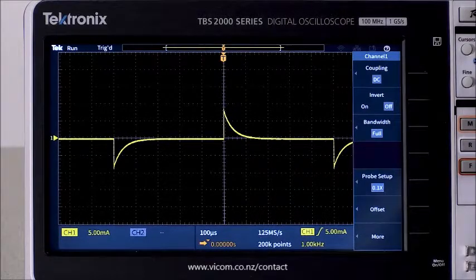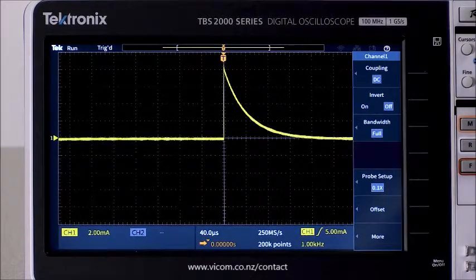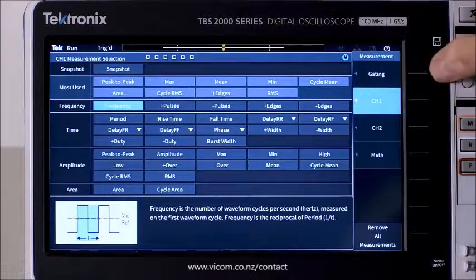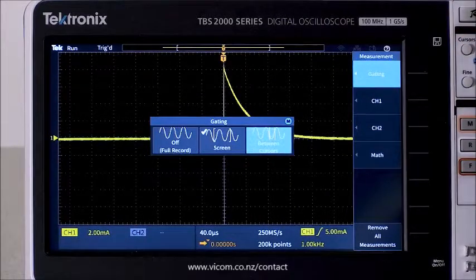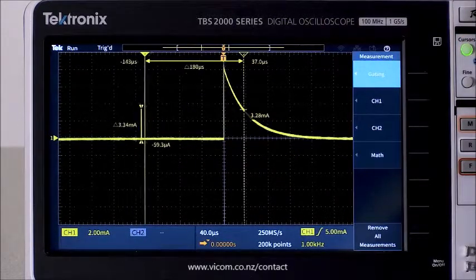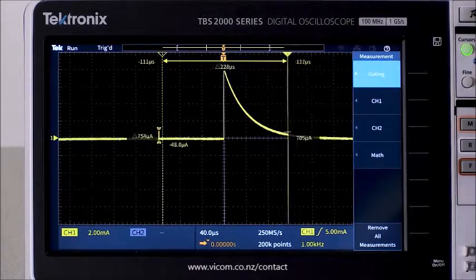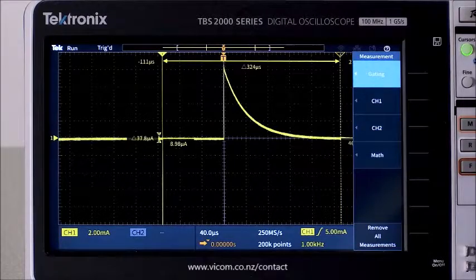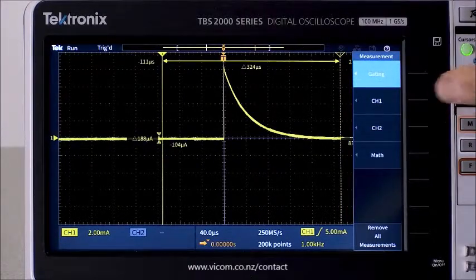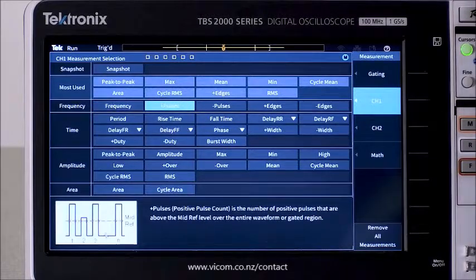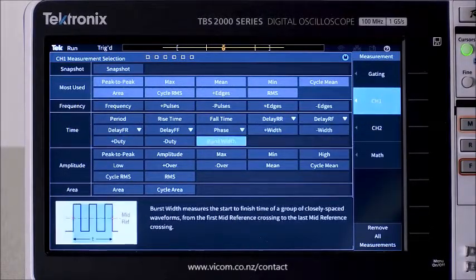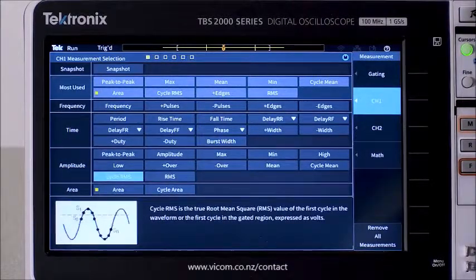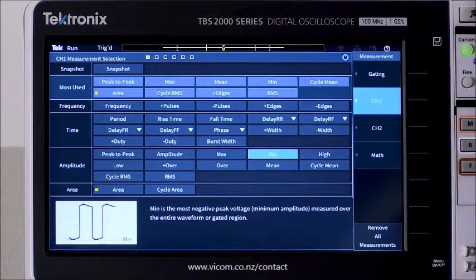Let's focus on the charging part of the cycle. Since I want to focus specifically on the charging part of the cycle, I'm going to use cursor gating. Now I can specify exactly the part of the waveform I want to use. And I'll go in and turn on the area measurement.